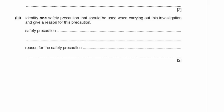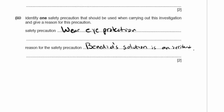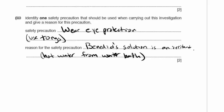Identify one safety precaution and give a reason. When using Benedict's solution, wear eye protection or gloves because Benedict's solution is an irritant. Alternatively, use tongs to remove test tubes from the water bath to avoid burning yourself with hot water. Only one safety precaution is required, so just put down one — don't write 'tongs' alone, say 'use tongs to remove the test tubes.'